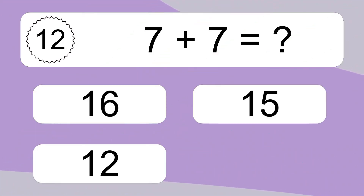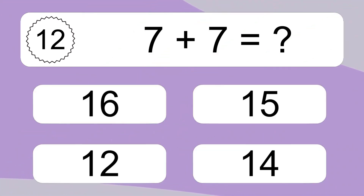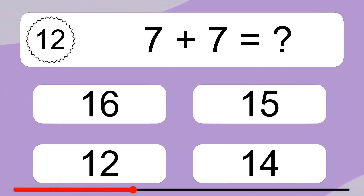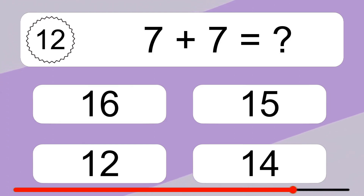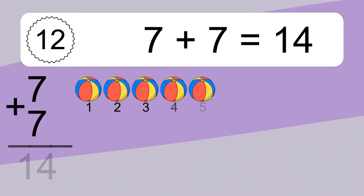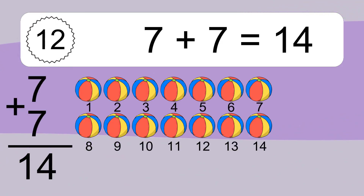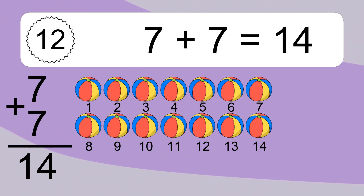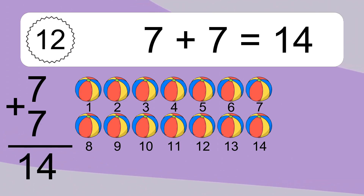Seven plus seven equals what? Seven plus seven equals fourteen. Let's count it: one, two, three, four, five, six, seven, eight, nine, ten, eleven, twelve, thirteen, fourteen.